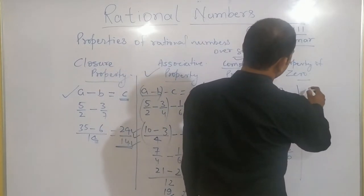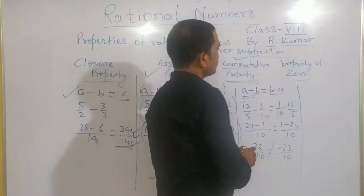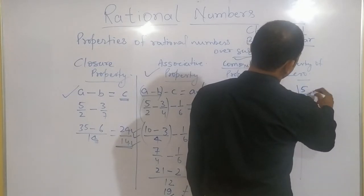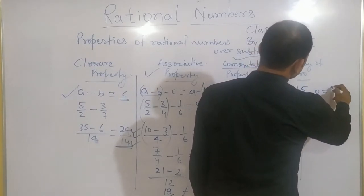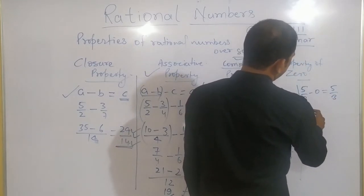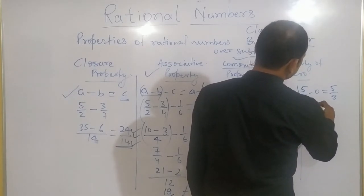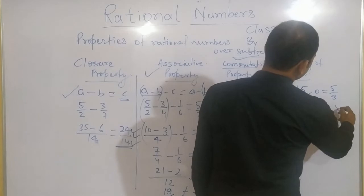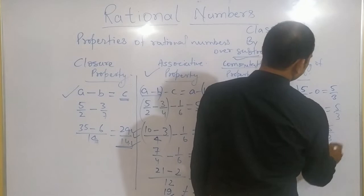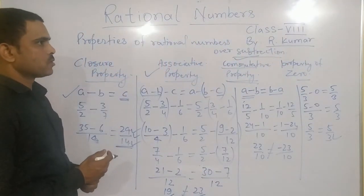Now, property of 0. If, this property says that if I subtract 0 from any of the rational number, we will get the same result. Means 5 by 3 minus 0. We are getting or not, we will check it. So, LCM will be 3. 5 minus 0, 5 by 3. This side also 5 by 3. Means, property of 0 is there for subtraction also.